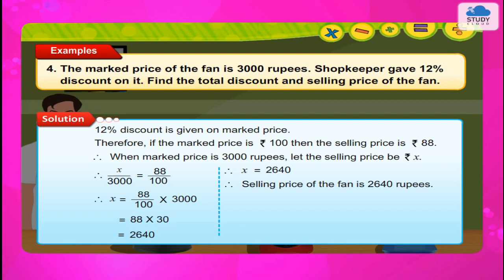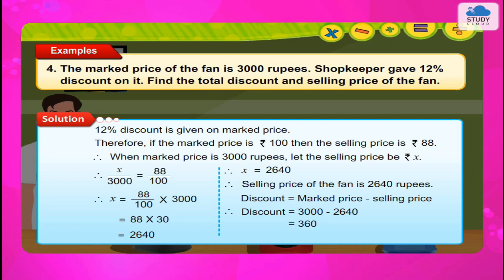We know that discount = marked price − selling price = Rs. 3000 − Rs. 2640 = Rs. 360. Therefore, discount = Rs. 360.